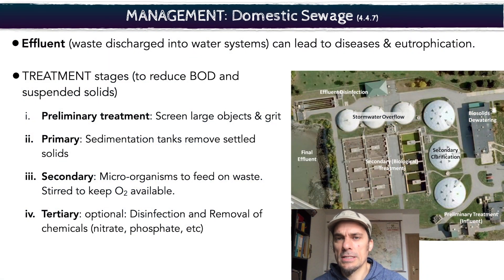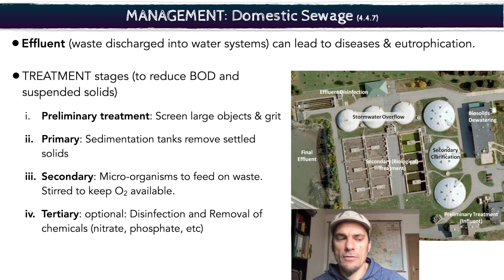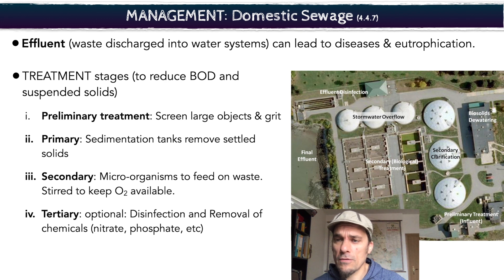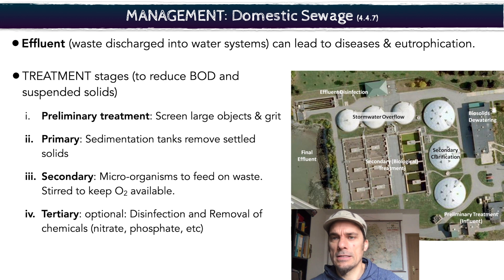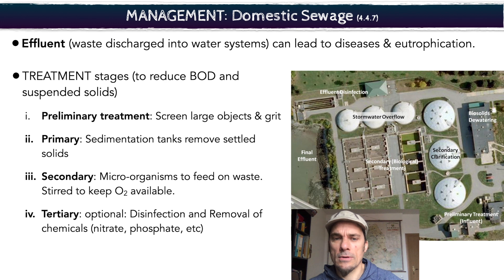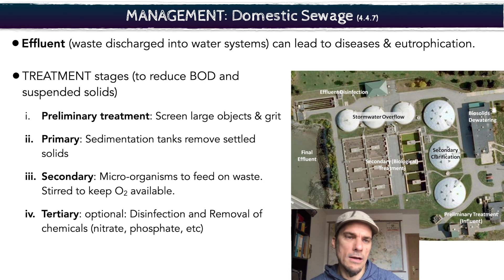Now looking at domestic sewage — this is to treat sewage coming out of cities and treat it before you put it back in the water systems. This is an aerial photo from a sewage treatment plant in Portland, Oregon. The goal here is to take the sewage, treat it, and release the effluent into the water systems clean and free of any diseases or chemicals that will cause eutrophication or pollute the water as it enters the normal water system.